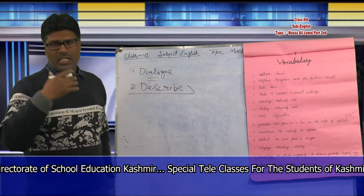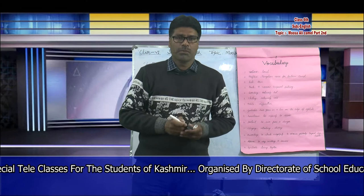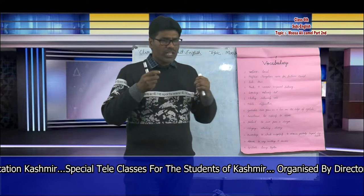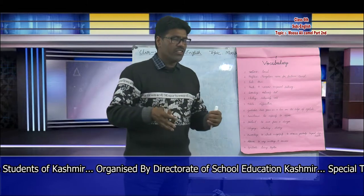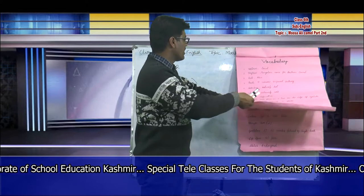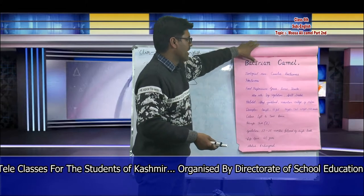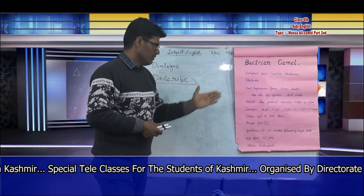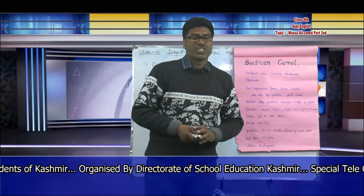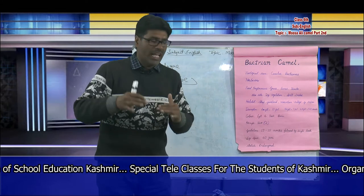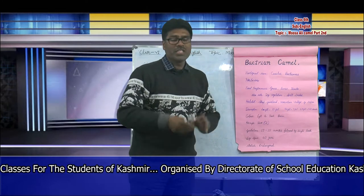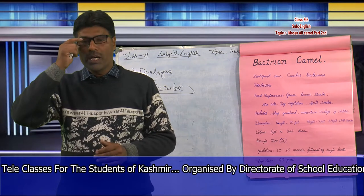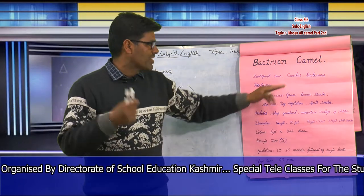We have already learned things about the Bactrian camel. Let us see how we can describe this Bactrian camel. We can describe it in different ways. On this chart, I have already described the Bactrian camel in points. The first point is the zoological name: it is Camelus Bactrianus. I am repeating — the zoological name of the Bactrian camel is Camelus Bactrianus.